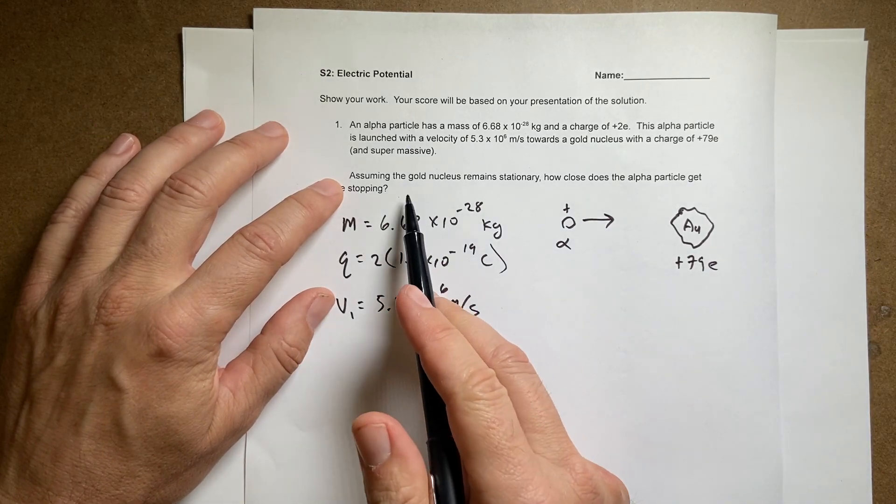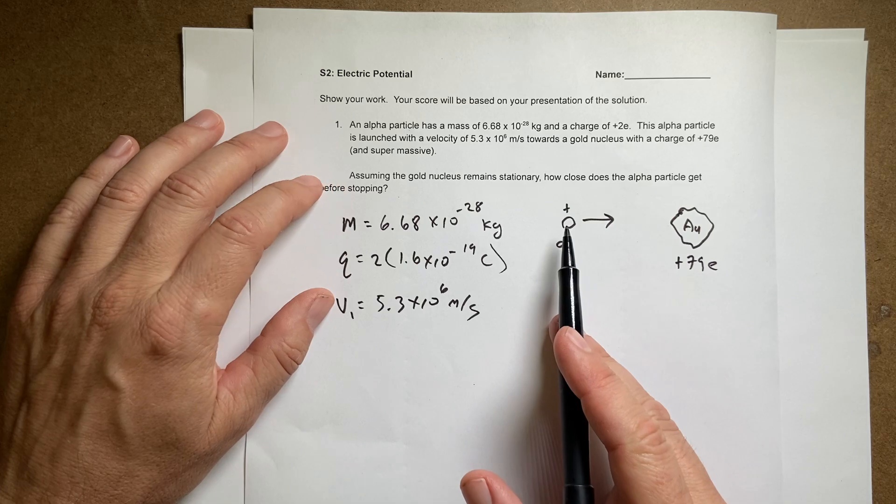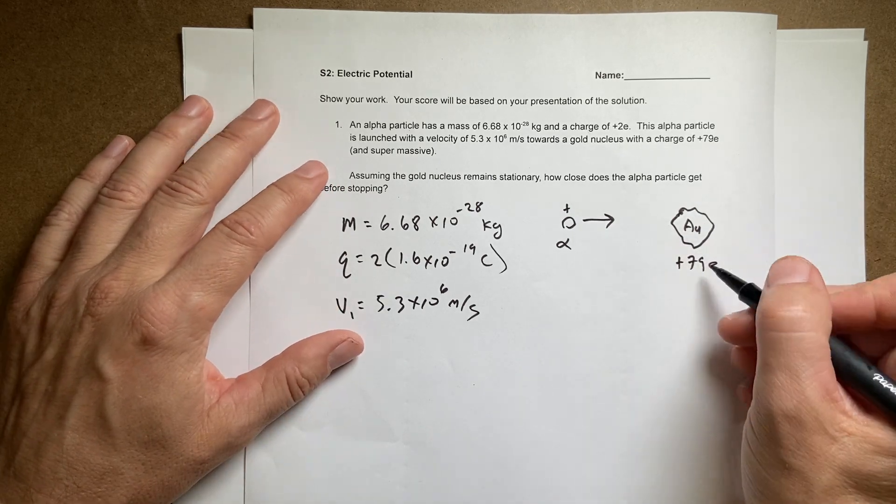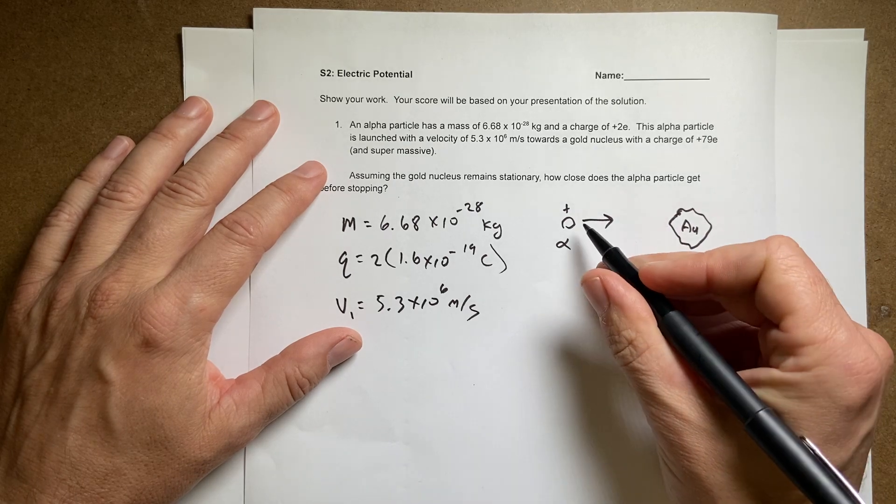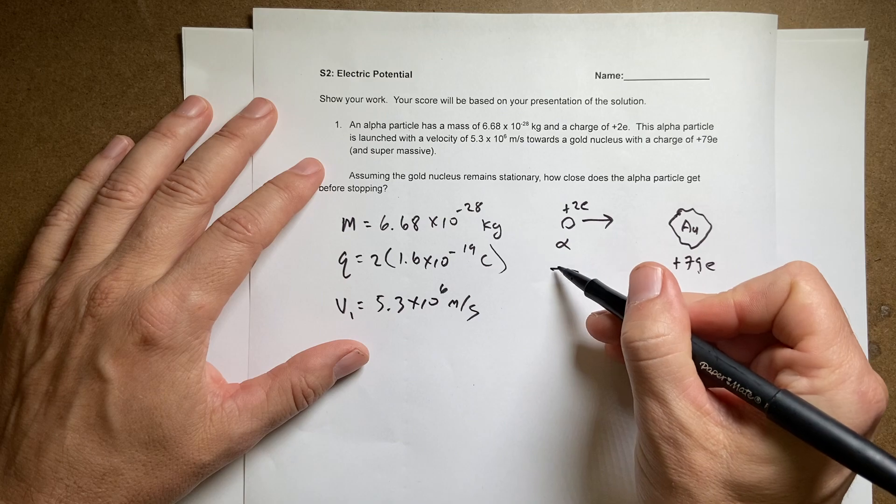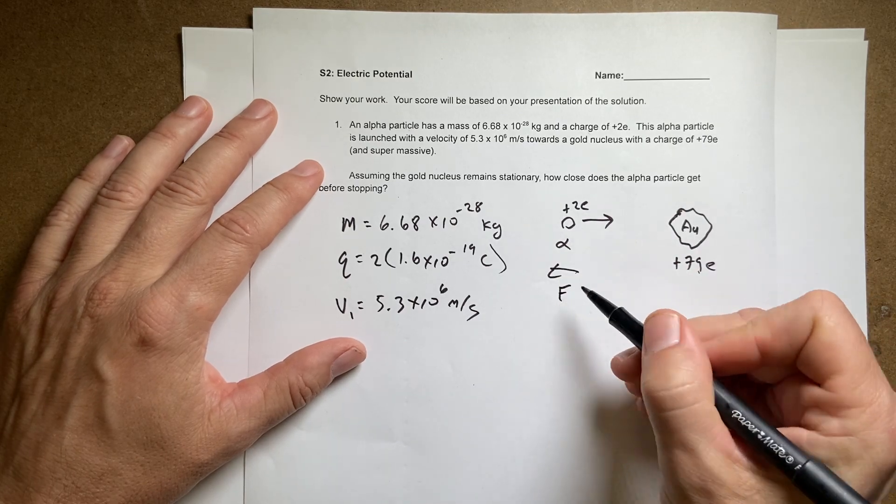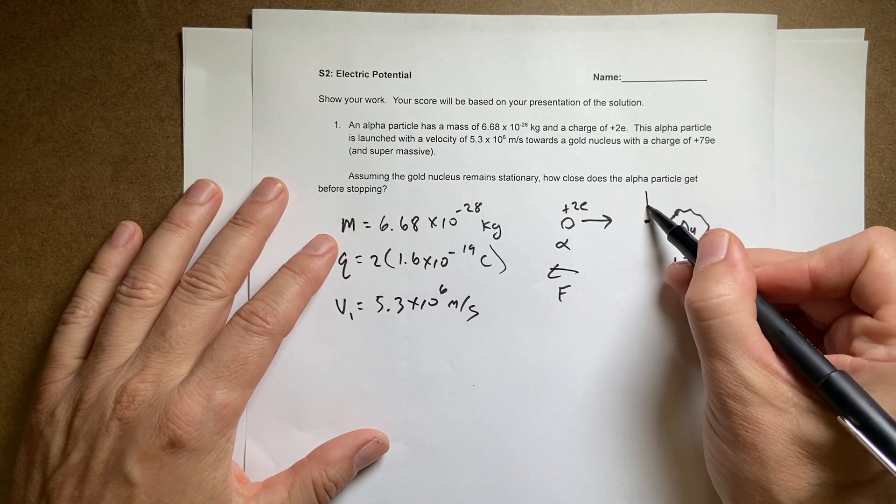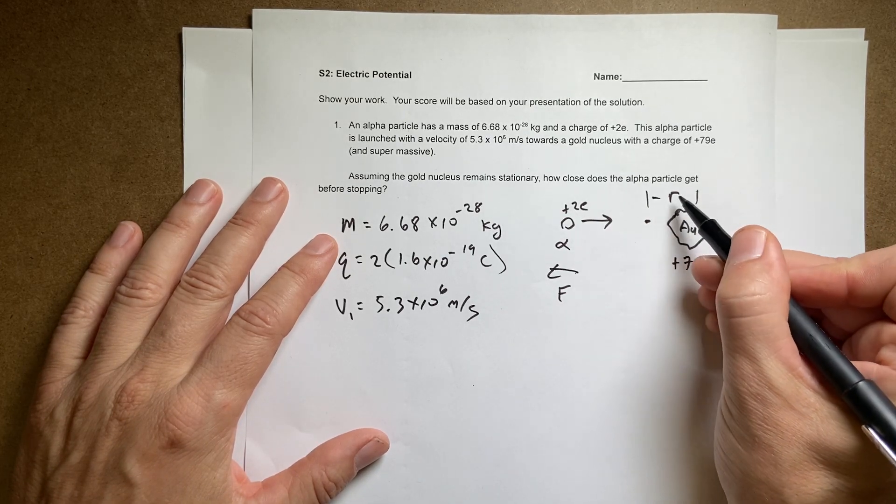And so if we assume the gold nucleus remains stationary, how close does this get before stopping? So why does it stop? Well, if this is plus 79 e and this is plus 2 e, then there is a force pushing backwards this way. And so as this thing moves this way, it's going to slow down and it will eventually stop some distance right here. We'll call that r.